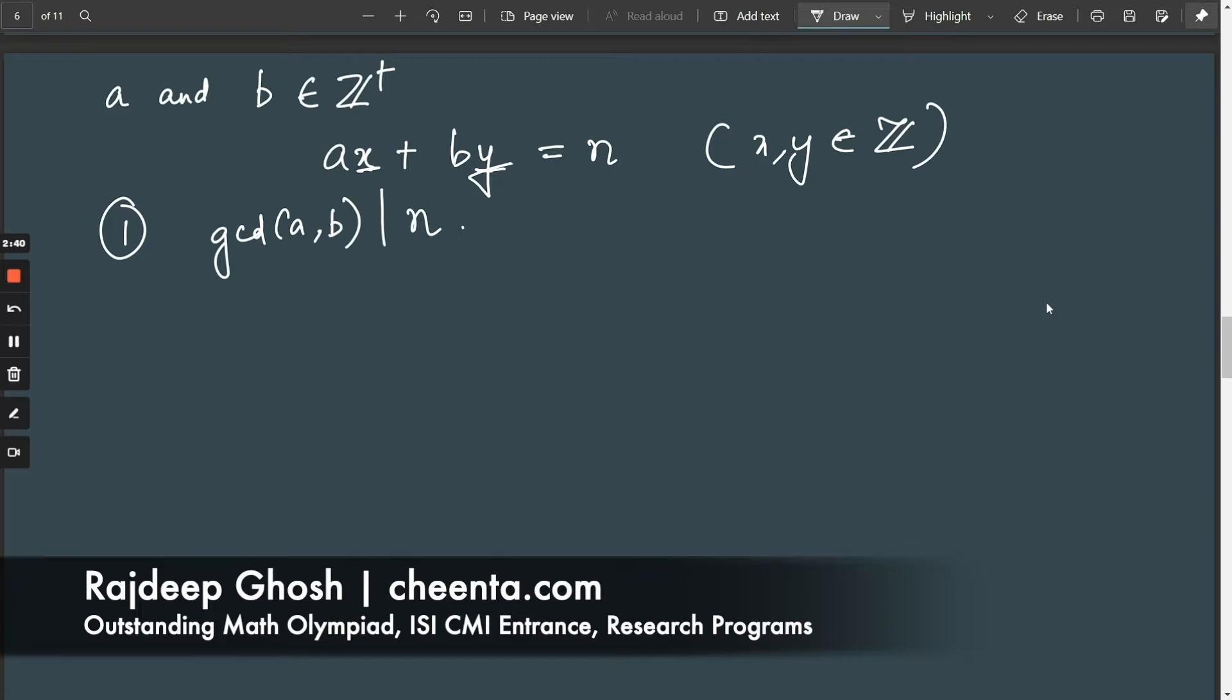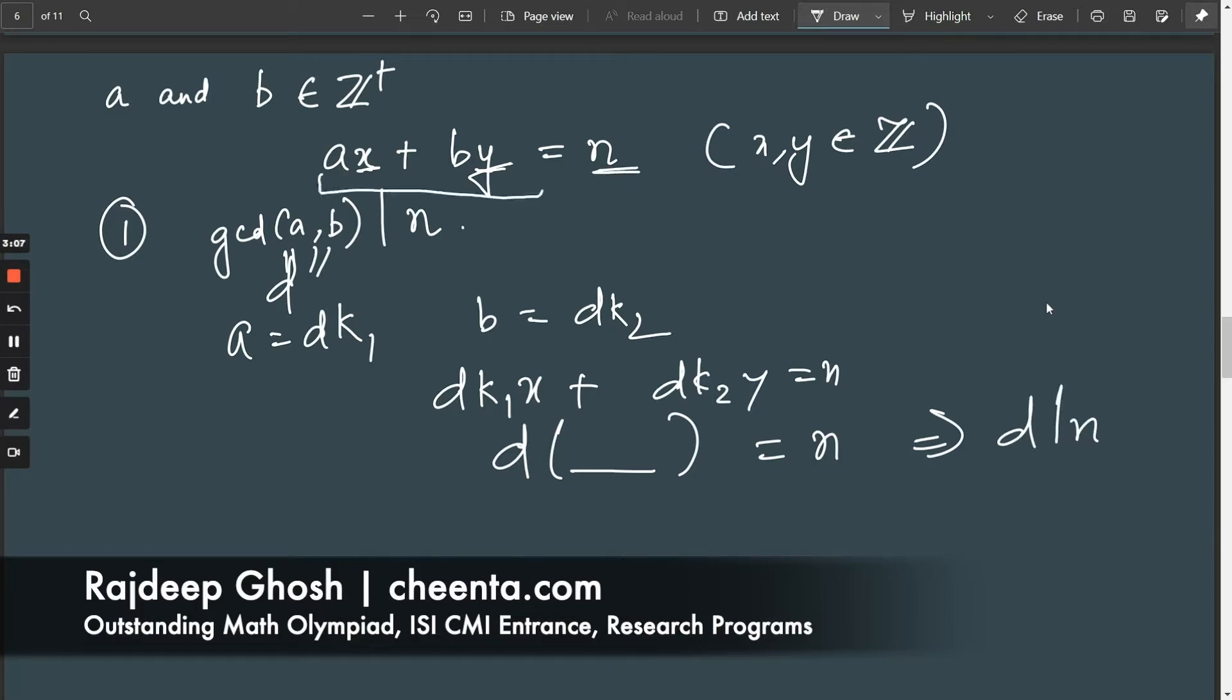The gcd of a and b is a common factor, say it's d. And I can actually write a as d·k1, and b as d·k2. If the gcd is d, then what we have is d·k1·x + d·k2·y = n. And hence, d times some integer is equal to n, which implies that d divides n. So for any value n such that ax + by = n, the gcd must divide n. So what we have is, all linear combinations have this one thing in common, they're all divisible by the gcd.